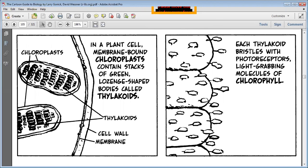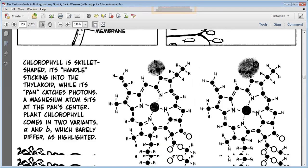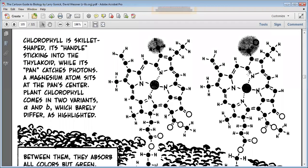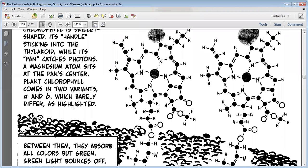Each thylakoid bristles with photoreceptors. Their work is to grab the light. This is why chlorophyll is present. The light-grabbing molecules of chlorophyll. See this is the huge structure. It is difficult to remember but it should be remembered if you will do it in a proper way. Chlorophyll is skillet-shaped, its handle sticking into the thylakoid while its pan catches photons. A magnesium atom sits at the pan center. Chlorophyll comes in two variants, A and B, which barely differ.